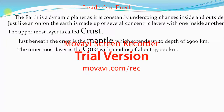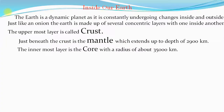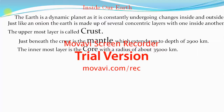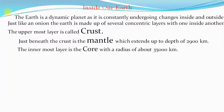The Earth is a dynamic planet as it is constantly undergoing changes inside and outside. Just like an onion, the Earth is made up of several concentric layers with one inside another. The uppermost layer is called the crust. Just beneath the crust is the mantle, which extends up to a depth of 2900 kilometers. The innermost layer is the core, with a radius of about 3500 kilometers.